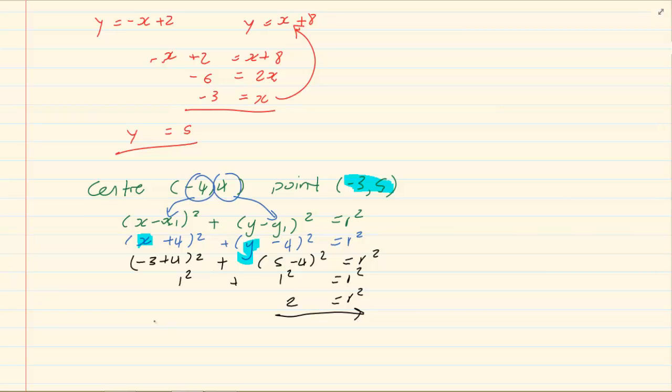Rewrite the equation. So it is (x + 4)² + (y - 4)² = 2. And that is the equation of the circle.